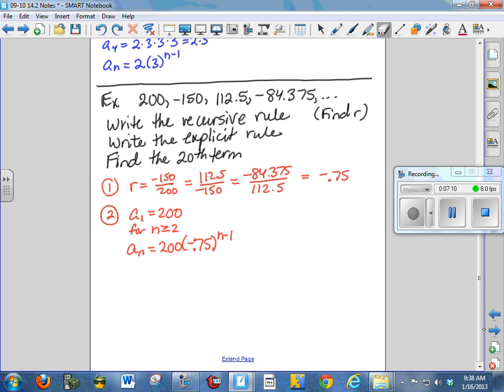Actually, I just wrote the wrong rule, excuse me. It's a sub n minus 1 times negative 0.75. And it might actually look better to write it as a sub n equals negative 0.75 a sub n minus 1 and put that in front. So that's recursive.